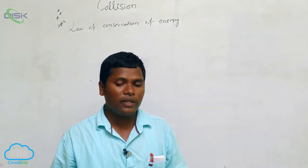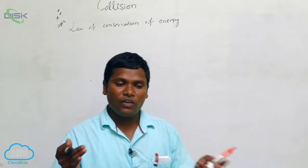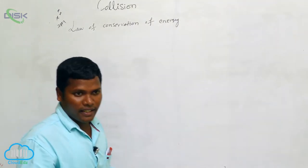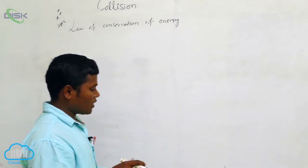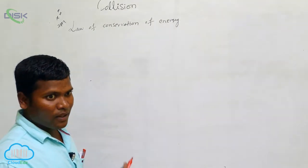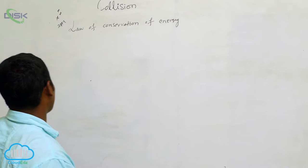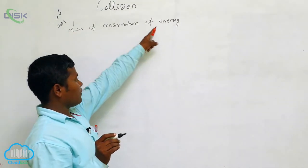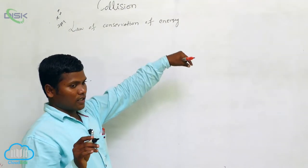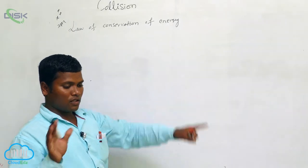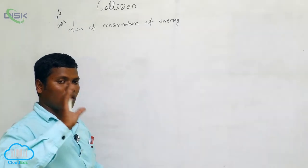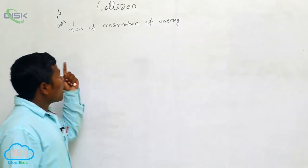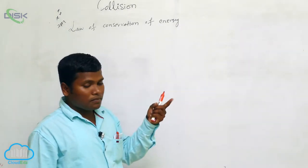There are many types of energies that we will discuss in the last class — nuclear energy, electric energy, and different types of energies. You already know very well that conservation means we cannot create energy, we cannot destroy energy; it is changing from one form to another form. So those are the laws of conservation of energy.